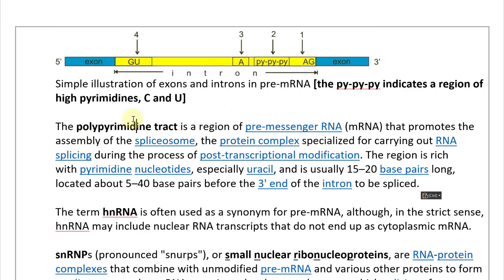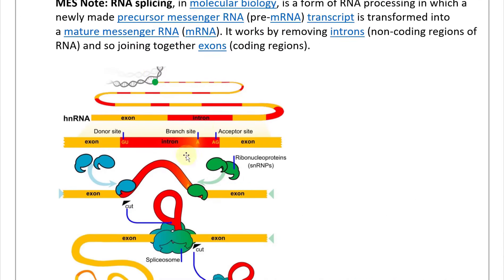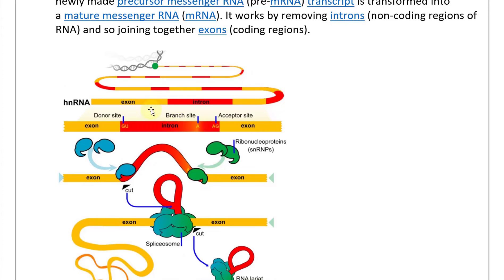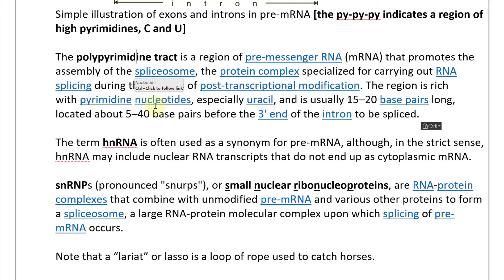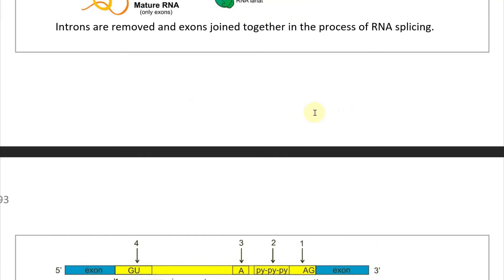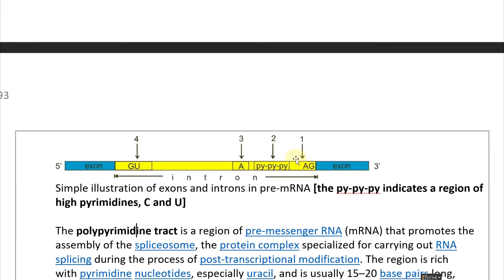The pyrimidine tract is a region of pre-mRNA that promotes the assembly of the spliceosome, the protein complex specialized for carrying out RNA splicing during post-transcriptional modification. After transcription, post-transcriptional modification removes these introns. The region is rich in pyrimidine nucleotides, especially uracil, and is usually 15 to 20 base pairs long, located about 5 to 40 base pairs before the 3' end of the intron to be spliced.